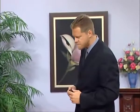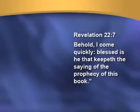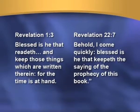Revelation itself is written in a chiastic style. Revelation 1 verse 3 says: 'Blessed is he that readeth and keepeth those things which are written therein, for the time is at hand.' Revelation 22 verse 7 says: 'Behold, I come quickly; blessed is he that keepeth the sayings of the prophecy of this book.' So Revelation chapter 1 verse 3 points toward chapter 22 verse 7 — one pointing toward the other.